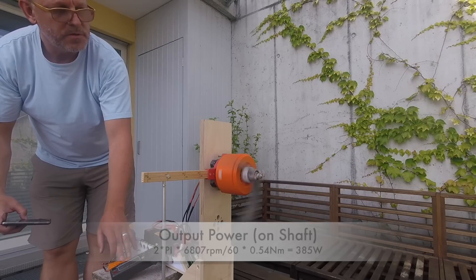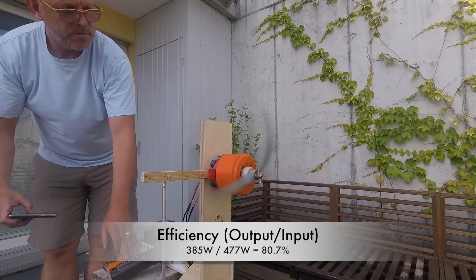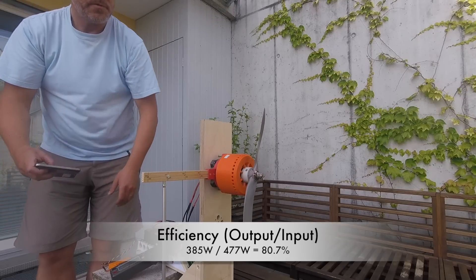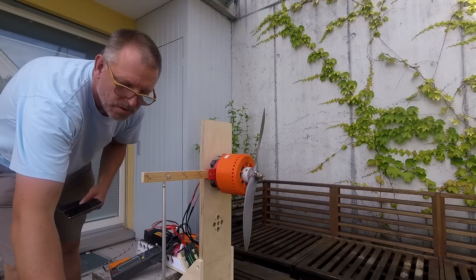The formula for the shaft power is basically a product between torque and rotation speed. It is around 380 watt. 100 watt are lost. This means 80% of the electrical input power is transformed into mechanical power. The lost power is basically heating up the ESC and the copper wires.